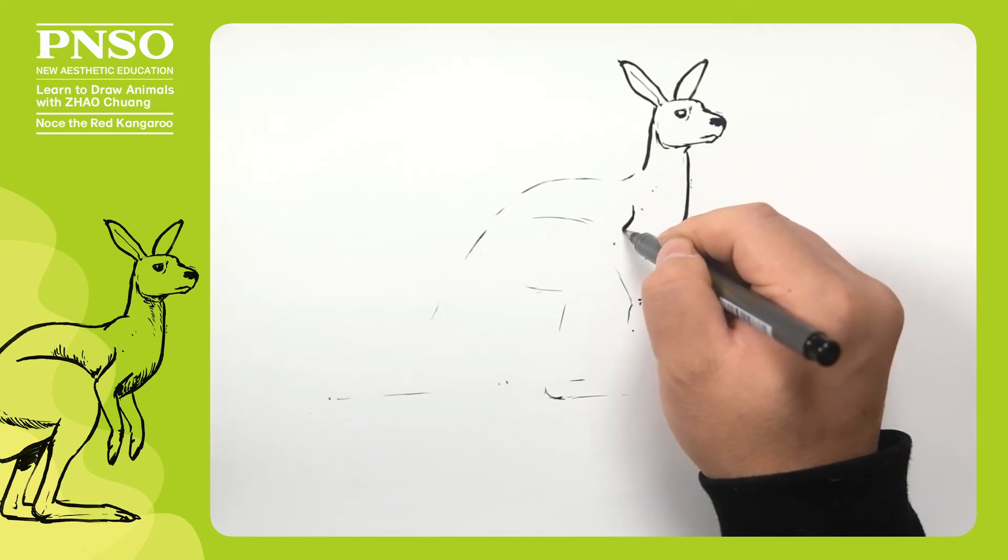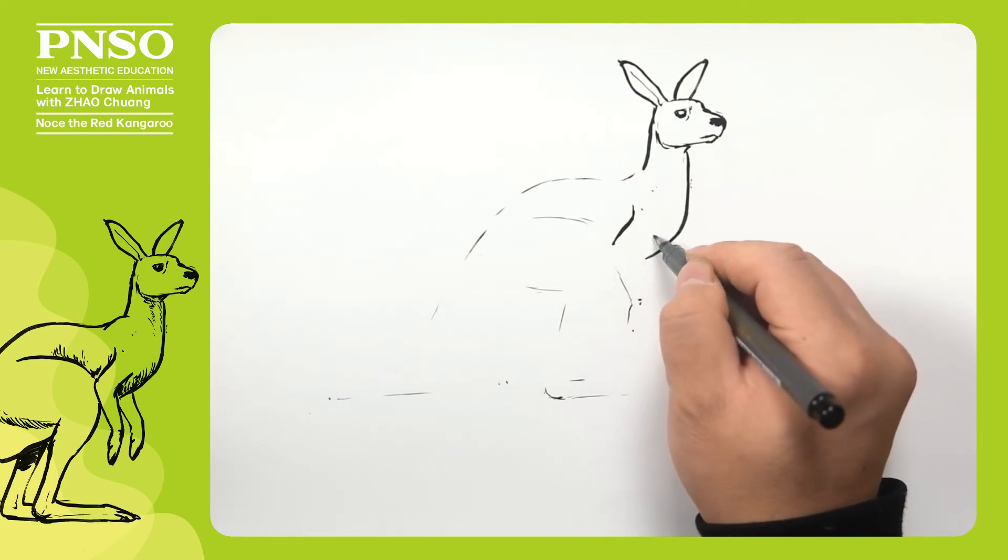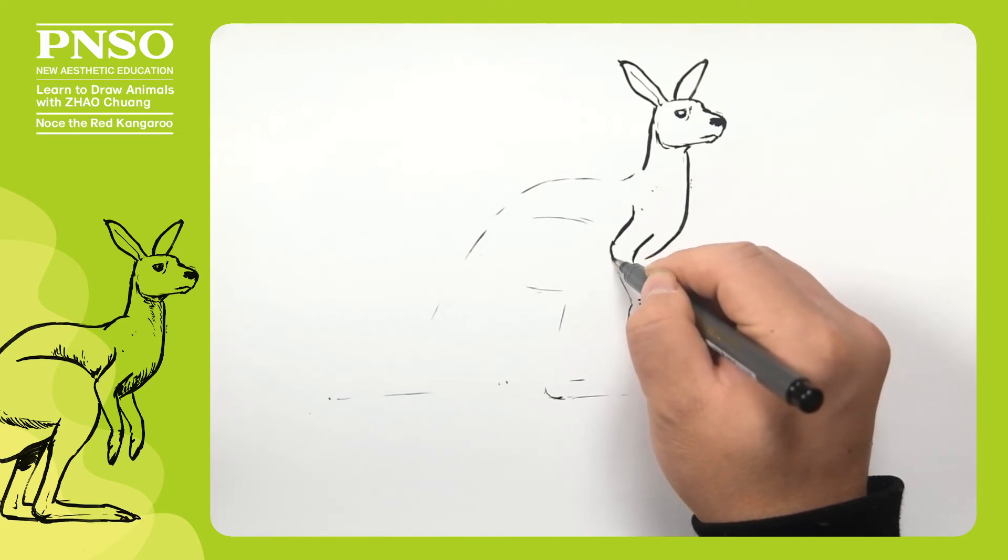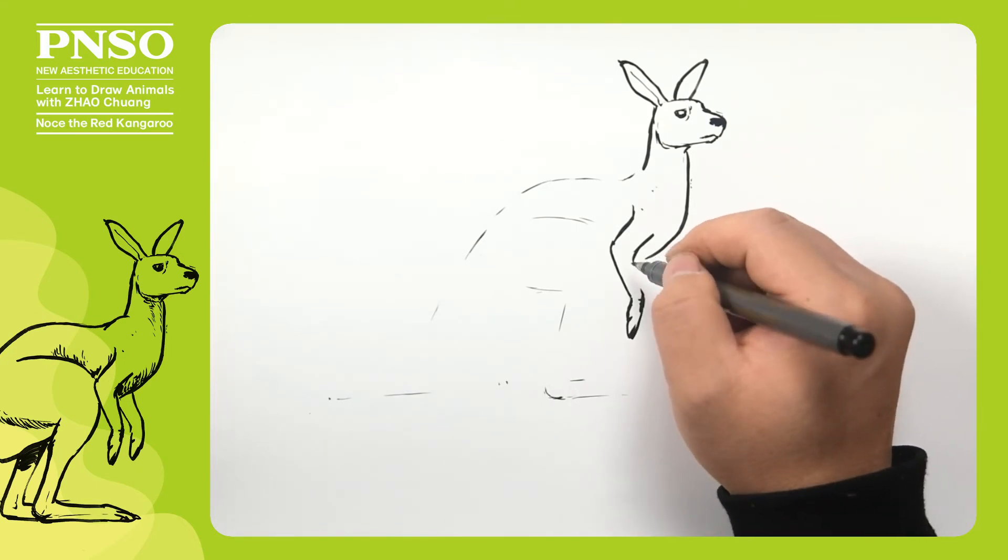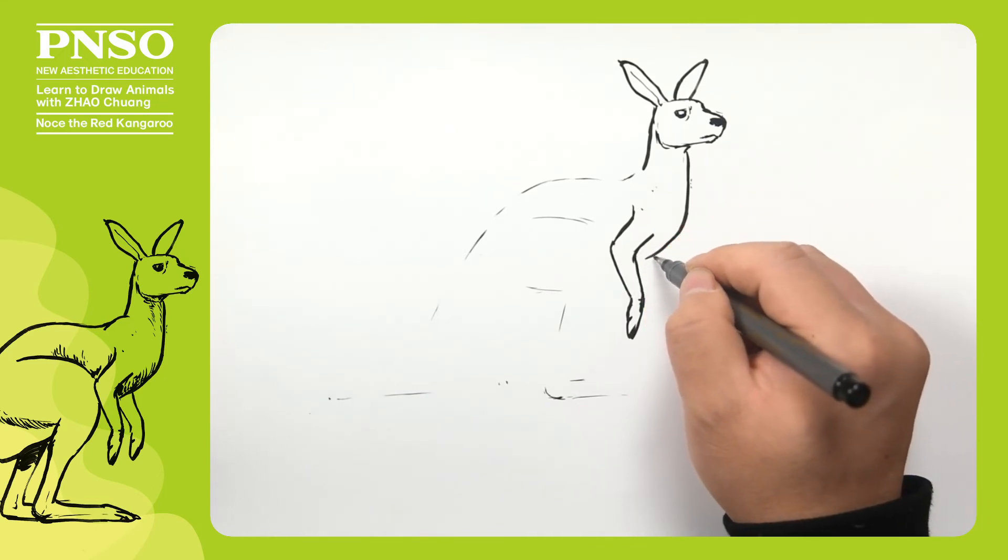Followed by its upper arms and forearms. Next, let's draw its hand which looks like that of the rabbit. Then let's draw the other hand.